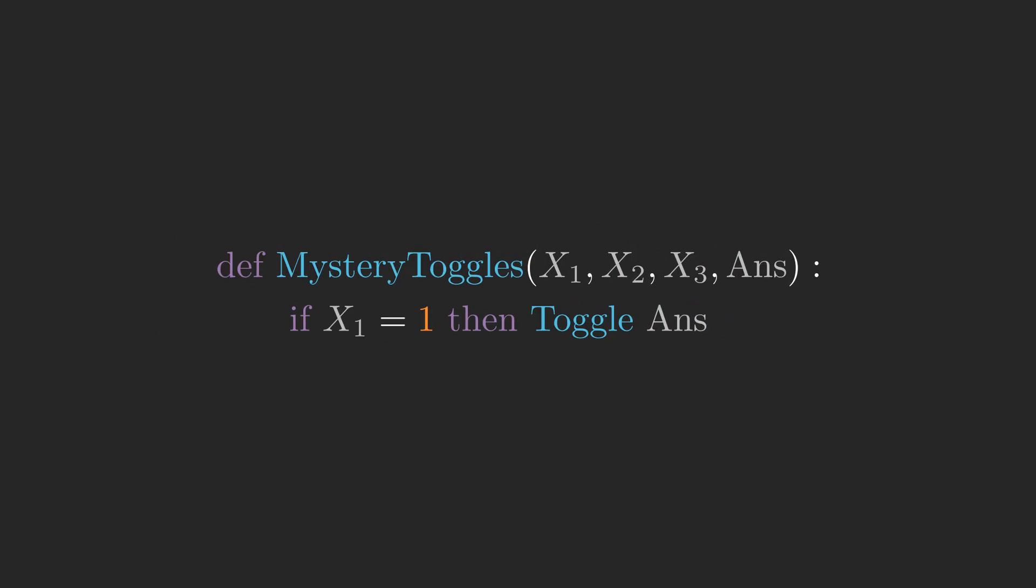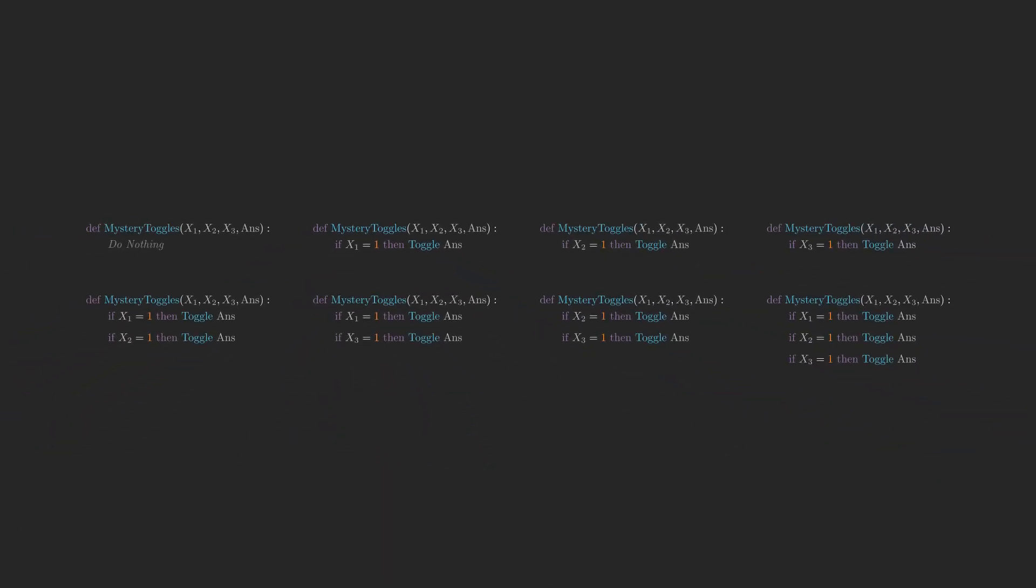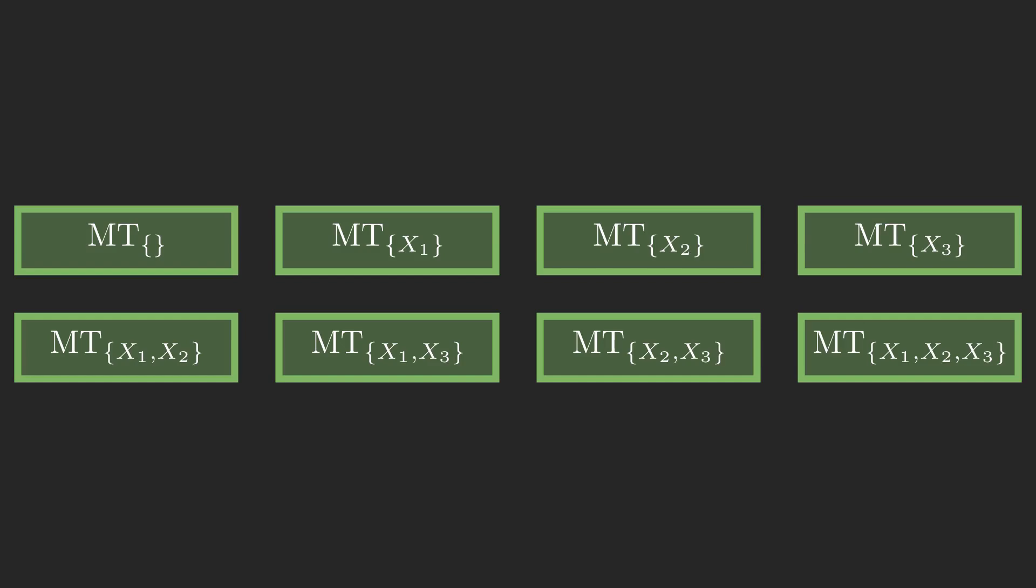In total, there are eight possible versions, which we can represent by each of the eight subsets from the set with x1, x2, and x3.